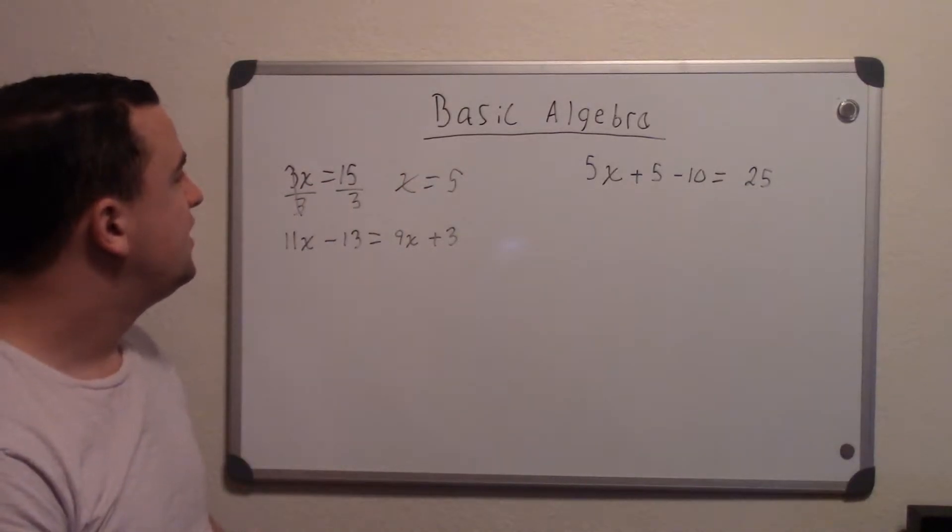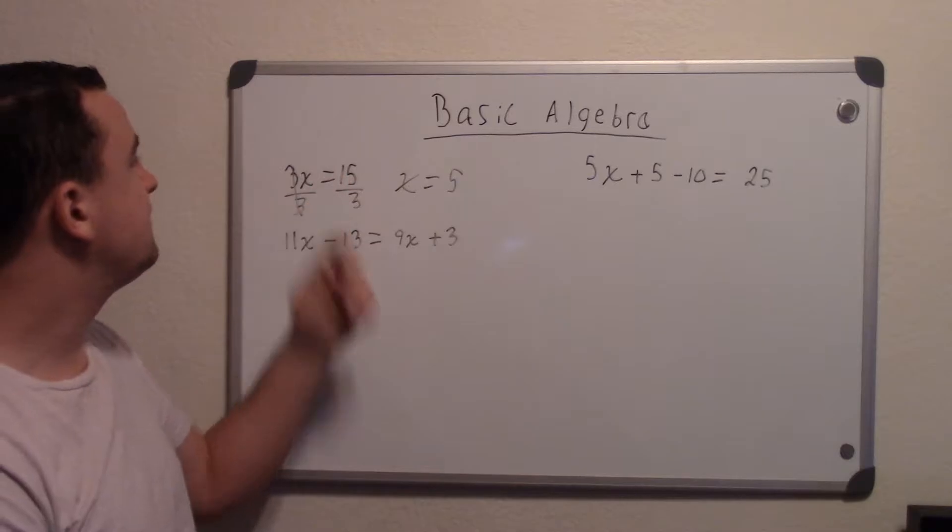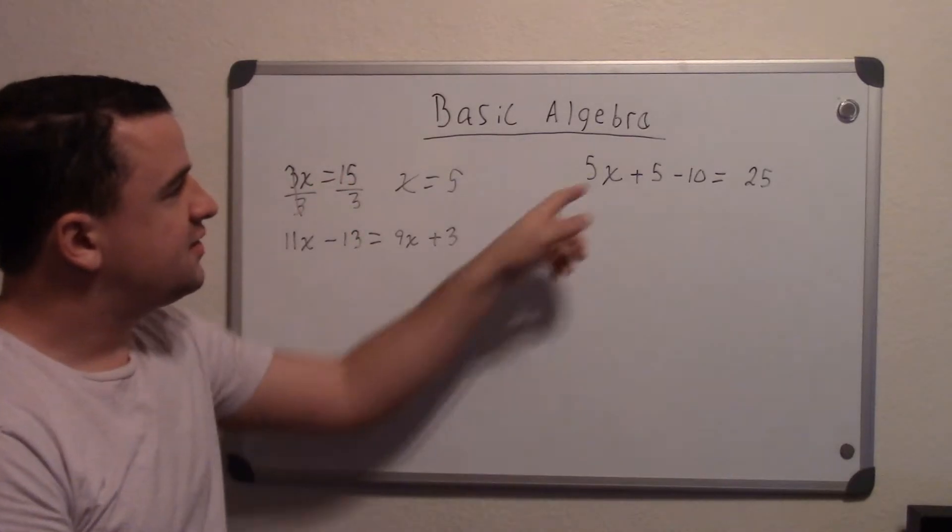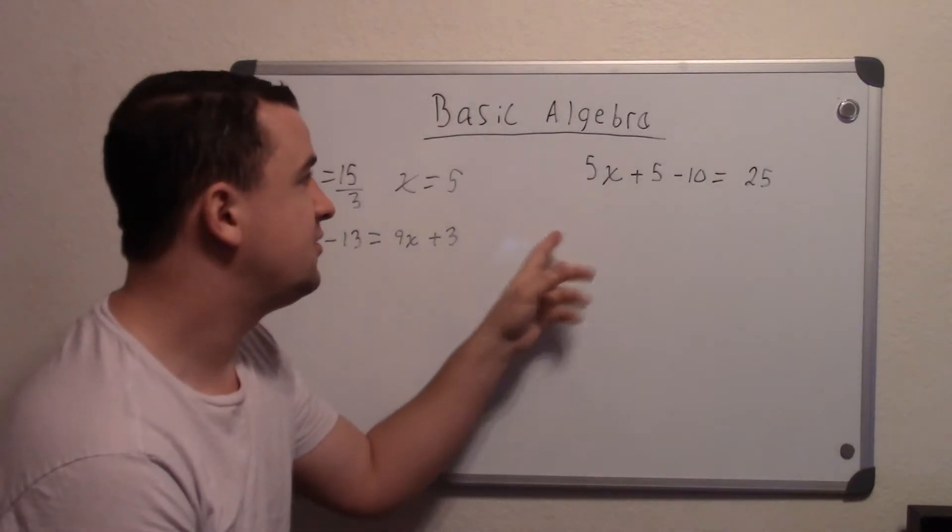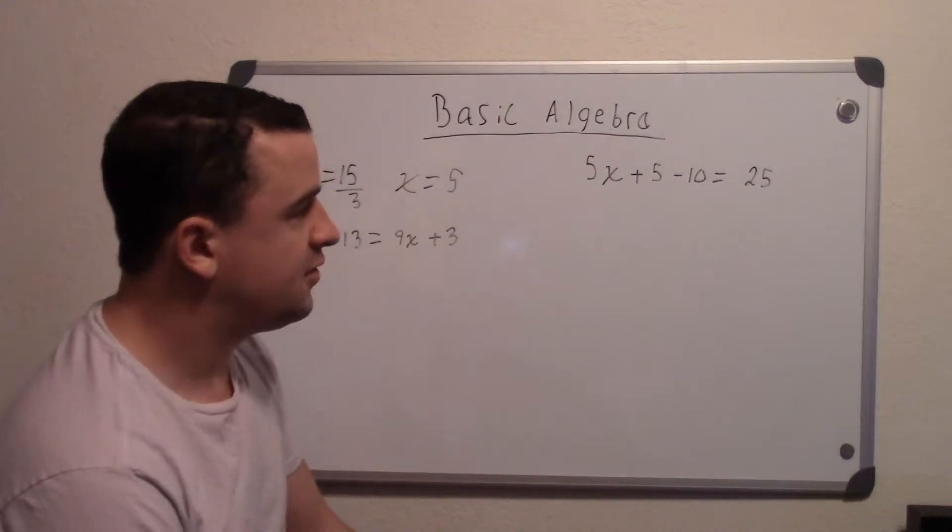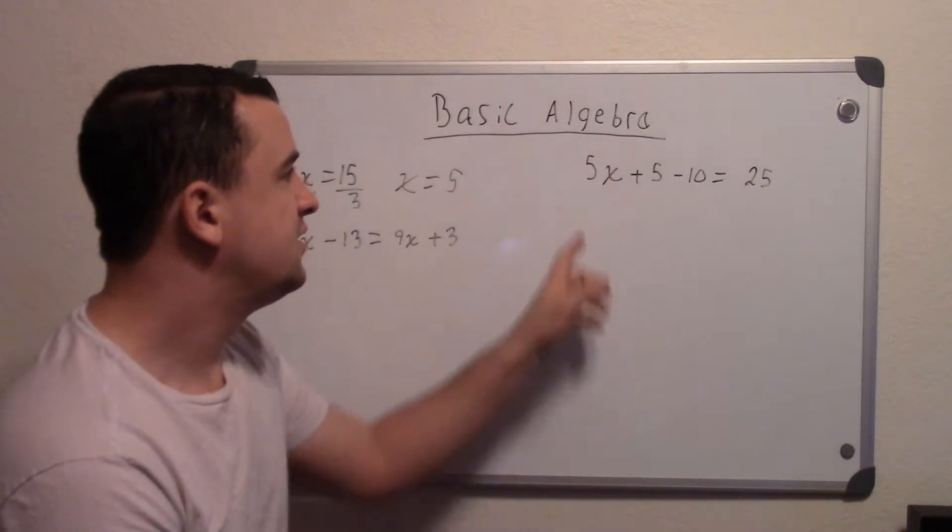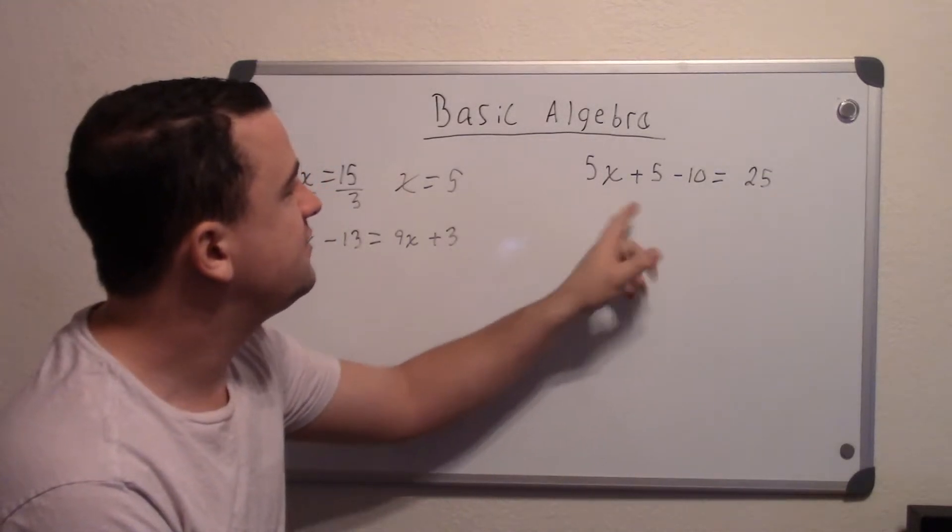You can always check your work by plugging it back in and making sure. And we know that 3 times 5 is 15. So now we go on to the next one. Sometimes what you want to do first is you may have to simplify. Or as they say, combine like terms. So in this case, we have only one x value. But we have two whole numbers. So we can combine those.